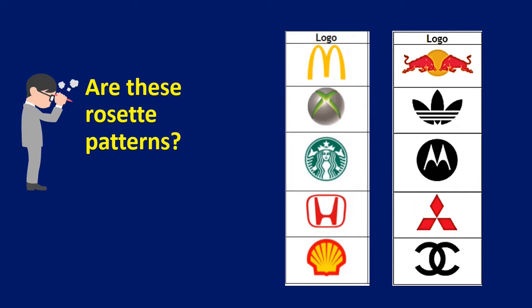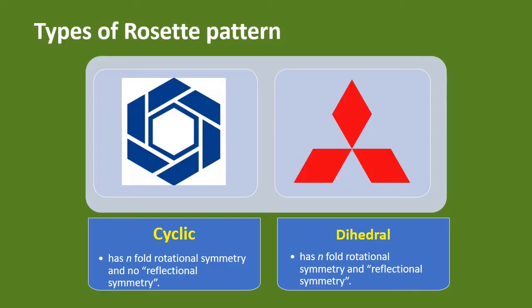These are some logos of companies that most of you are familiar with. Are these rosette patterns? Which among these are rosette patterns? Only Mitsubishi — this is the only logo which has a rotation symmetry of 120 degrees. The rest of the logos have no rotation symmetry. They are only symmetric along the vertical line, but that is not what we want when we talk about rosette patterns.